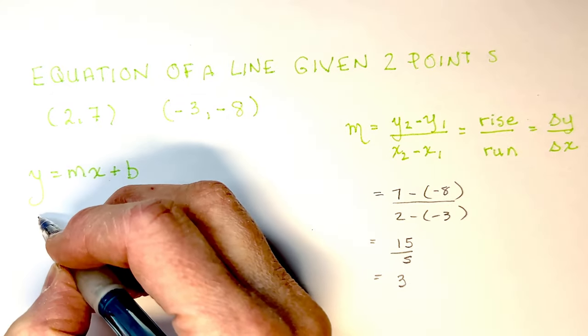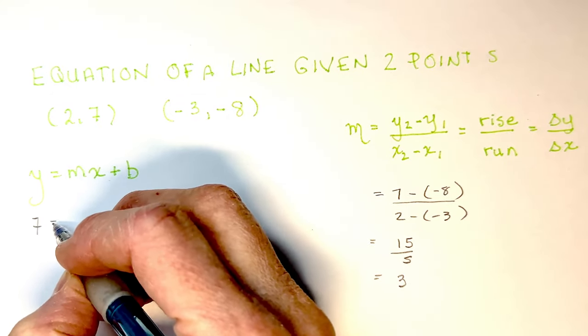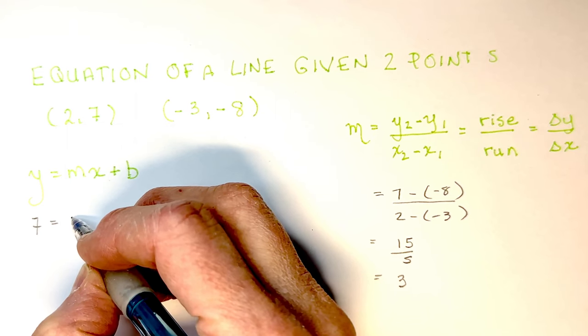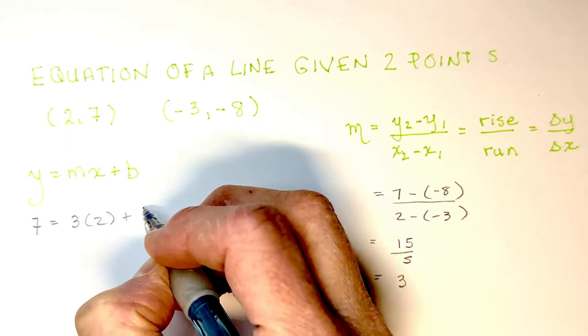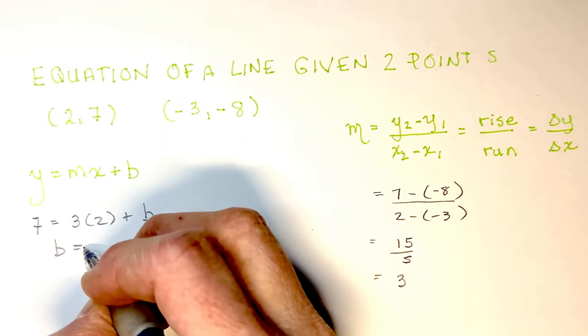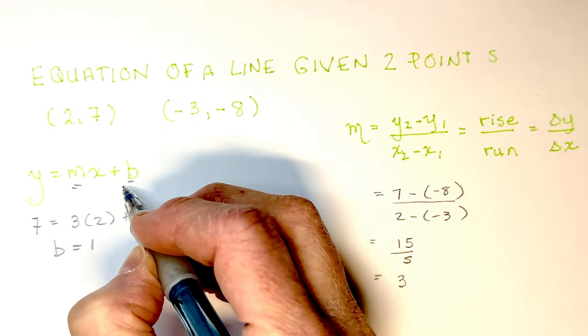All I have to do is plug that back into the equation along with one of the point values for x and y. So I'm going to put 7 equals 3 times 2 plus b, so b is equal to 1. I had to find m and b.